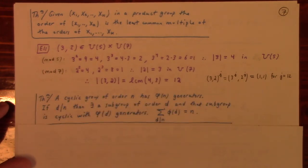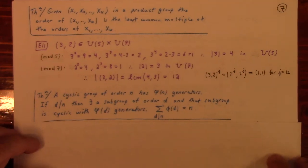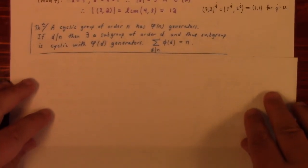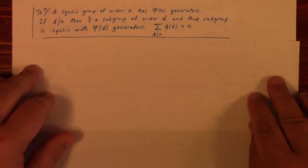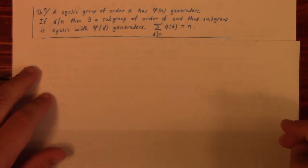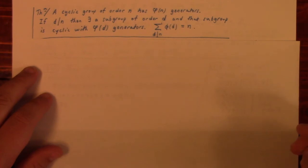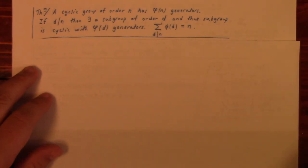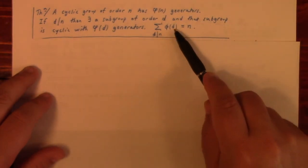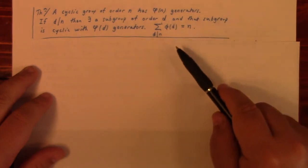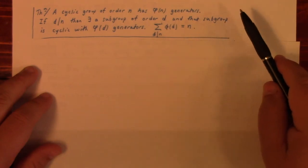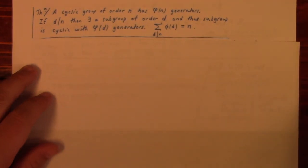A cyclic group of order N has φ(N) generators. If d divides N, there exists a subgroup of order d, and that subgroup is cyclic with φ(d) generators. Moreover, if we sum the Euler phi function over all divisors d of N, we get back N: ∑_{d | N} φ(d) = N.